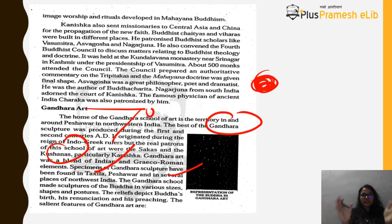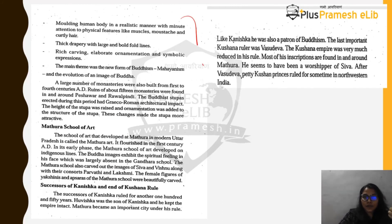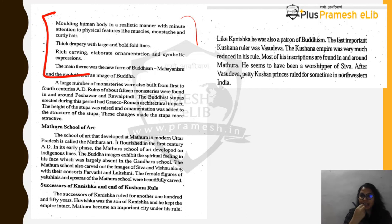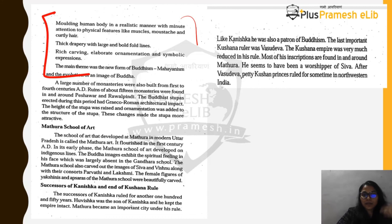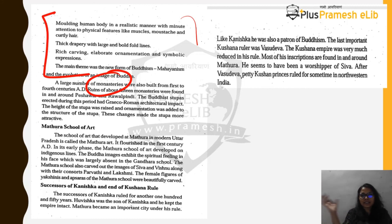Salient features of Gandhara art include detailed physical features of Buddha — mustache, beard, muscles — thick drapery with folded creases, rich carving, and enormous ornamentation. The main theme was Mahayana Buddhism. Buddhist stupas built during this time had Greco-Roman elements, and Buddha was depicted in various sizes, postures, and scenes including his birth, renunciation, and preaching. Earlier, Buddha was represented only by symbols like an empty throne, lotus, horse, or wheel — but in Gandhara art, he was given a face.